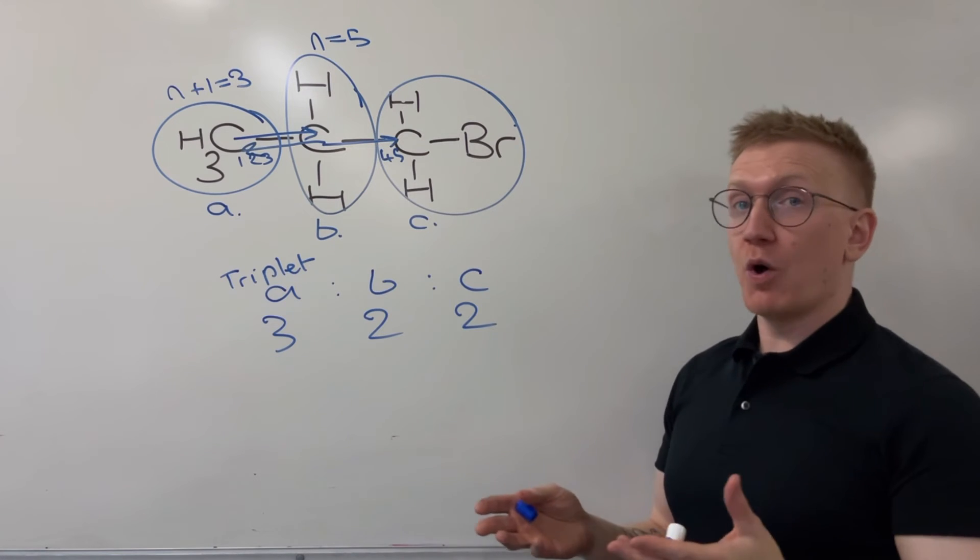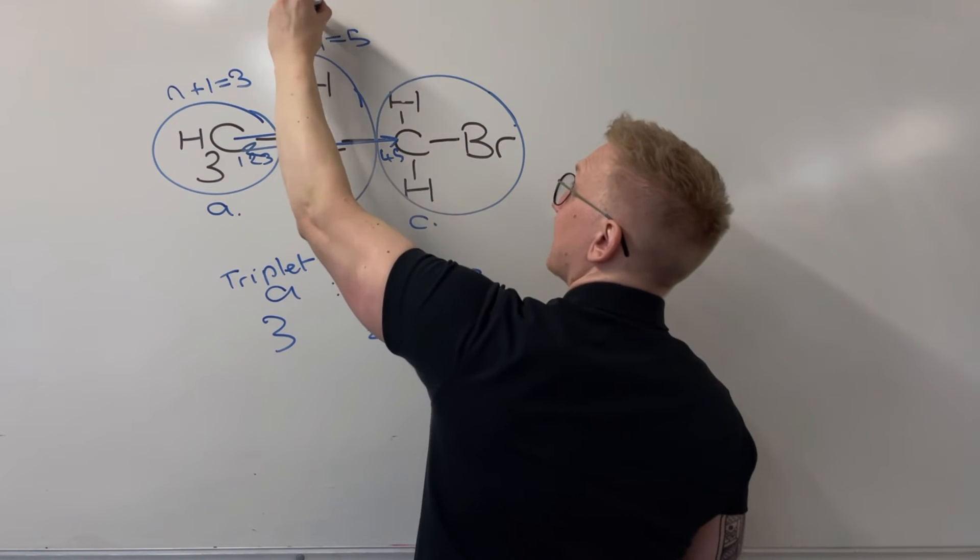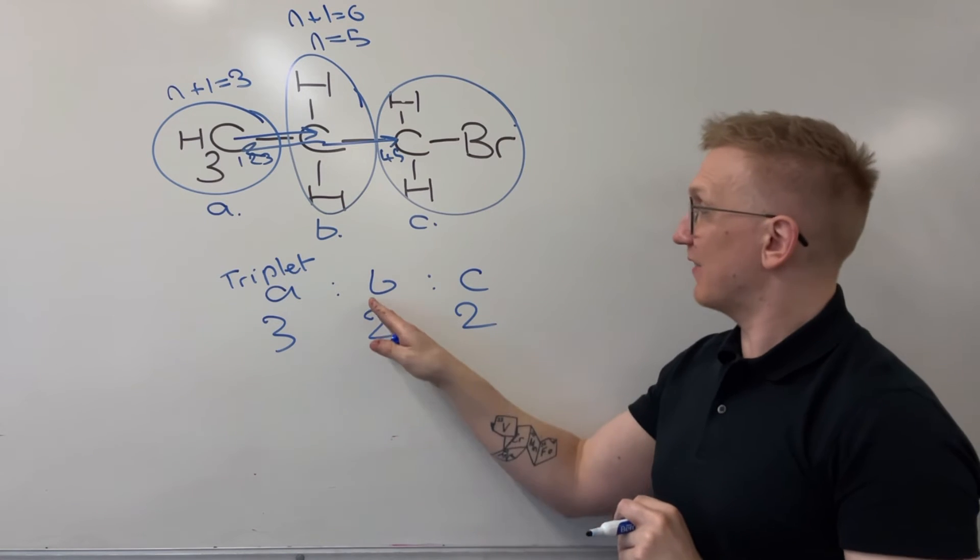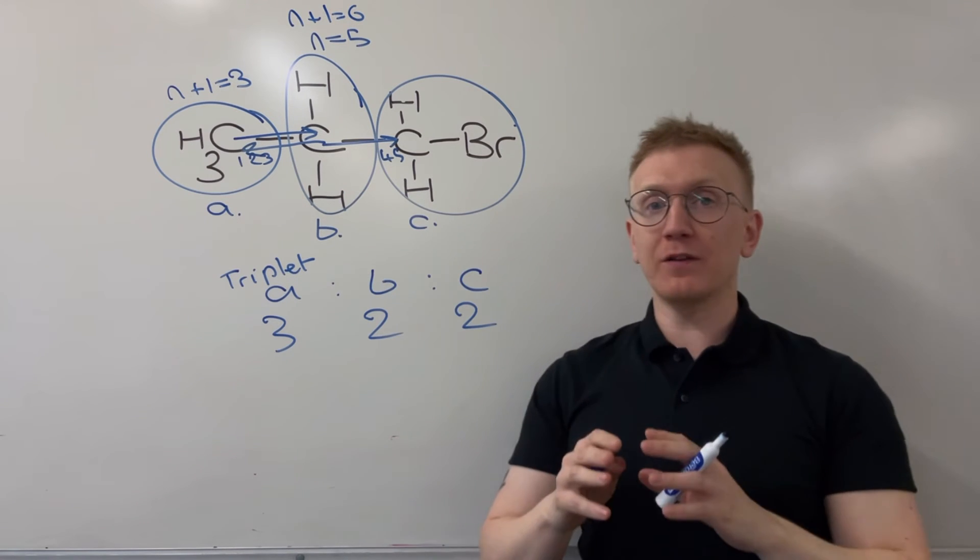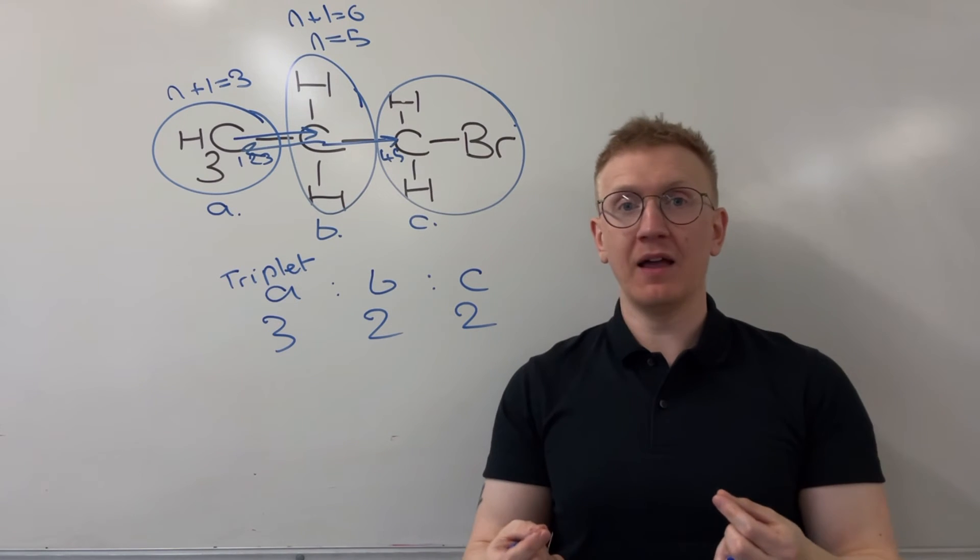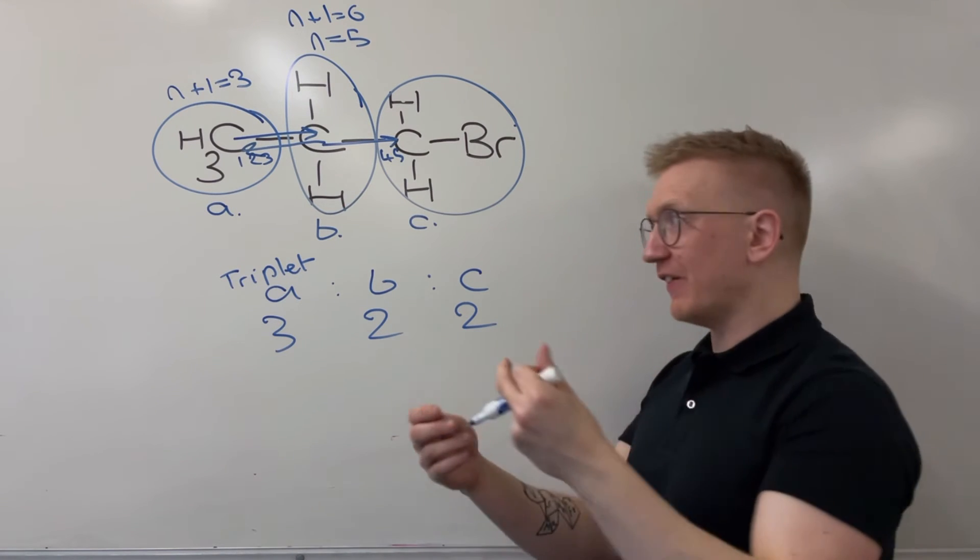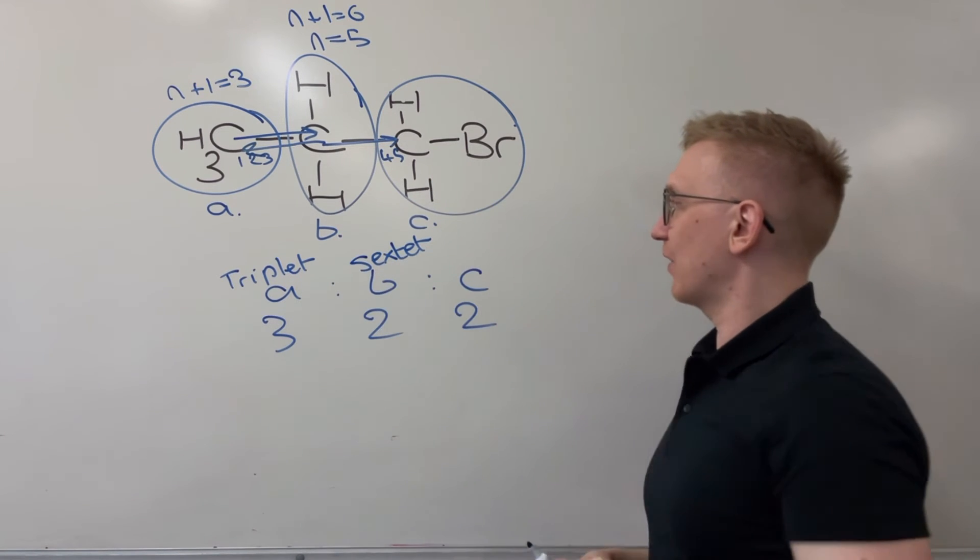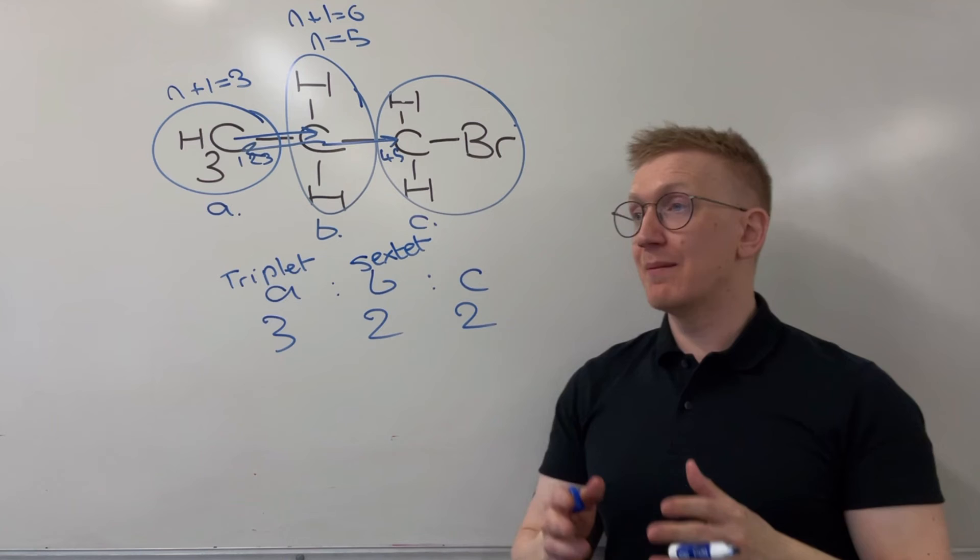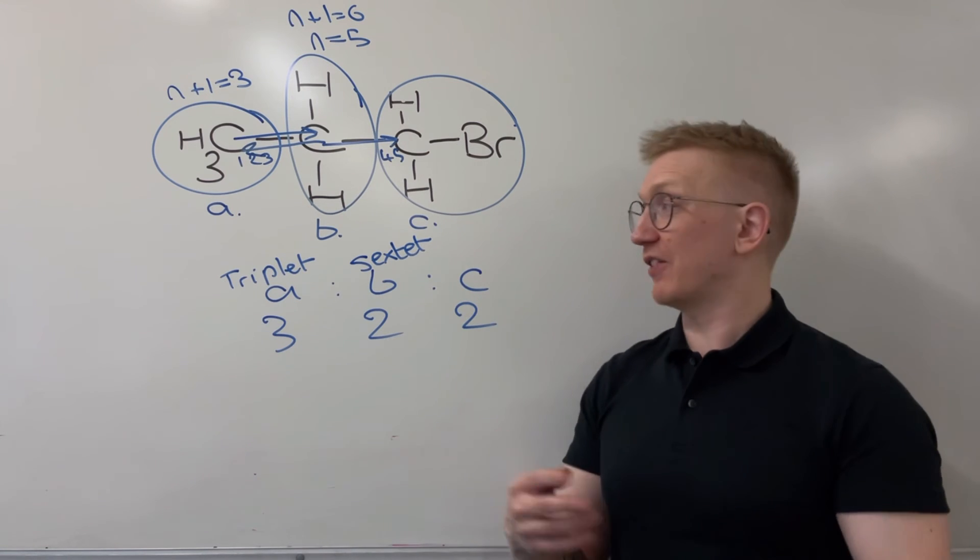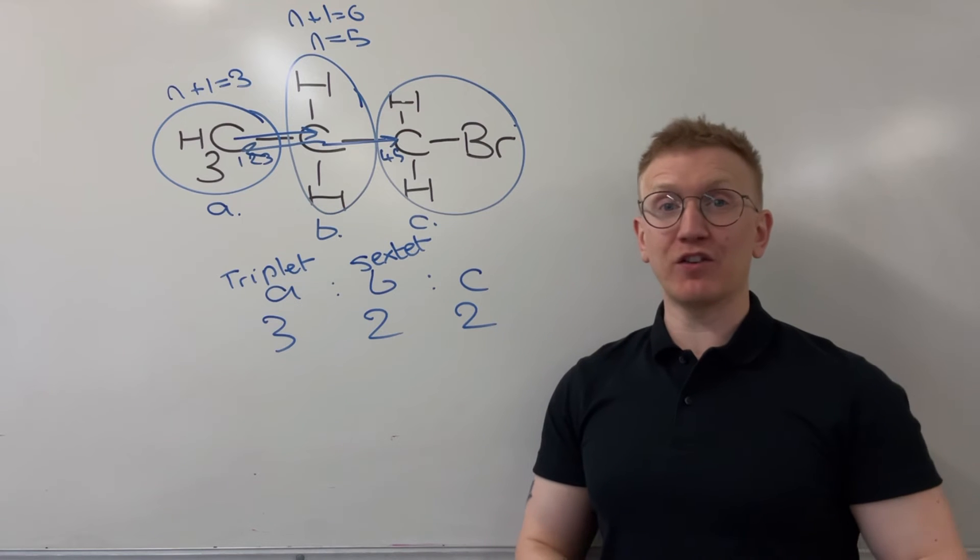That means my N value now for this middle environment going out to those neighbouring hydrogens is going to be 5. So my N plus 1 rule is going to give me 6. Which means my splitting pattern here is my peak for B is going to be split into 6 sub-peaks. We can call that a multiplier but we can also give it its more sophisticated name which is a sextet. So you could call it a multiplier of 6 sub-peaks as long as you describe that effectively. But sextet is the accurate terminology for it.